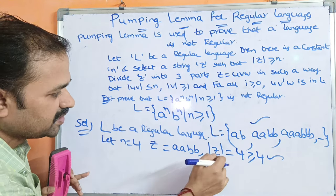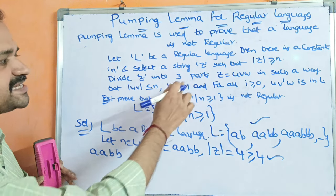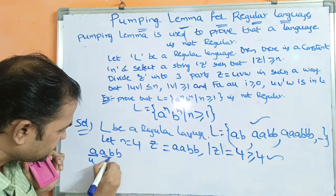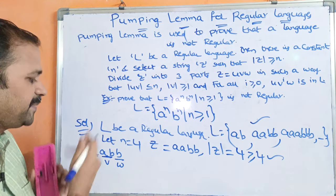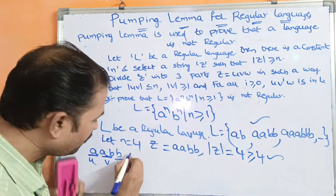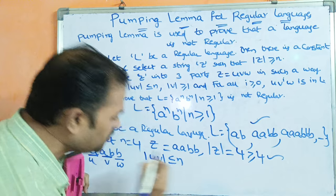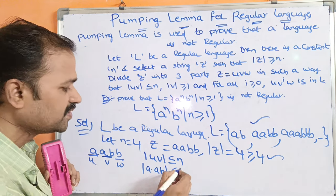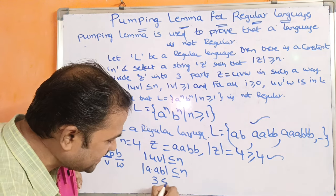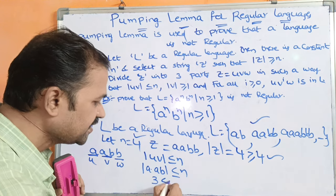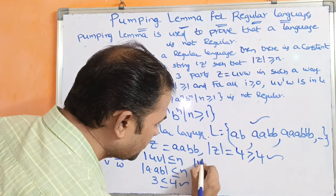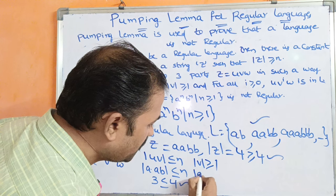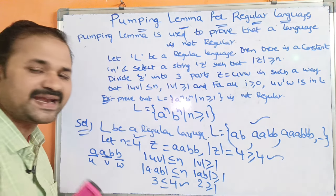Next, divide Z into three parts UVW. The string is AABB. Let U = A, V = AB, W = B. First condition: |UV| = |AAB| = 3, and 3 ≤ 4 (N=4), so condition is true. Second condition: |V| = |AB| = 2, and 2 ≥ 1, so condition is true.